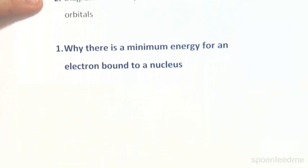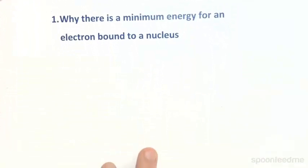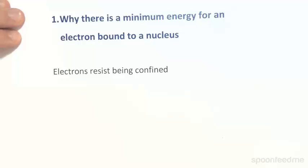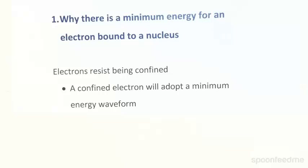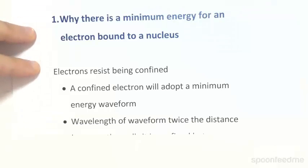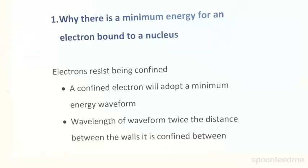So why is there a minimum energy for an electron bound to a nucleus? Electrons resist being confined. An electron that is confined between two walls will actually adopt a minimum energy waveform with a wavelength that is twice the distance between the walls it is confined between, as this is the maximum wavelength possible.